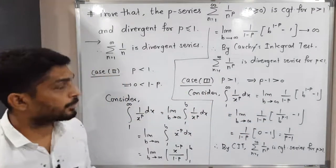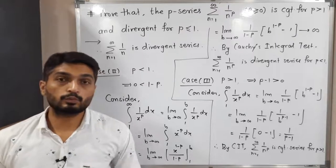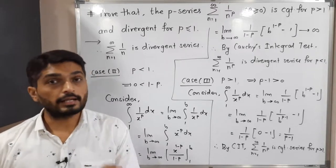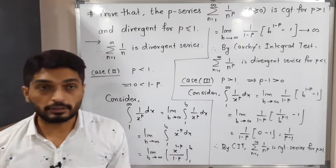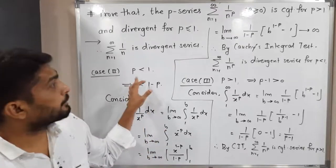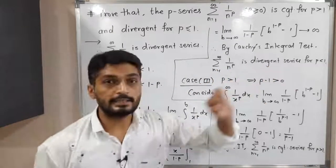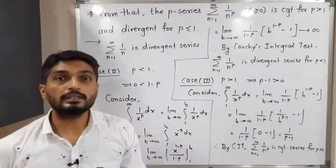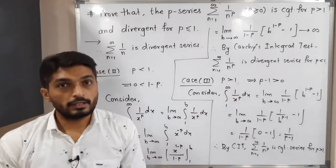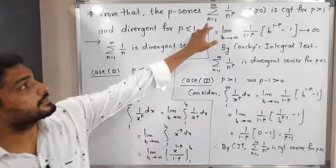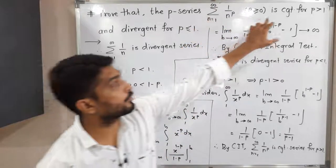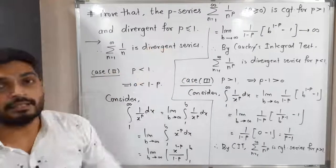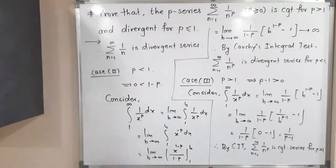In summary: Case 1 showed the series is divergent for p equal to 1; Case 2 showed the series is divergent for p less than 1; Case 3 showed the series is convergent for p greater than 1. Therefore, the p-series is convergent for p greater than 1 and divergent for p less than or equal to 1. This completes the proof.